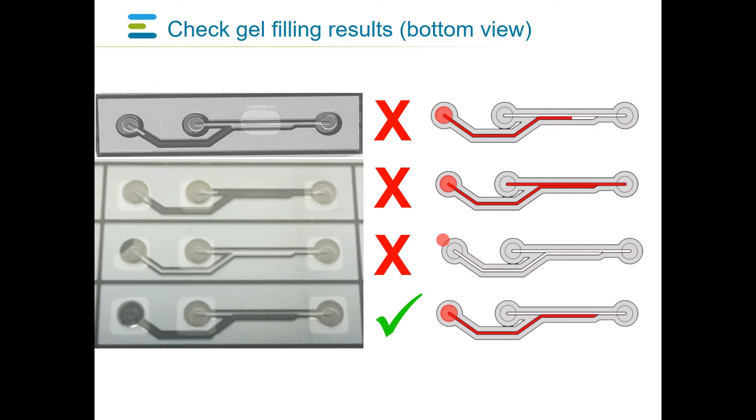If the gel suspension did not enter the microfluidic channel, the entire network will show up empty, thus light. If overflow has occurred, the entire network will appear dark. If early gelation has occurred, only part of the gel channel will be filled and show up as dark.